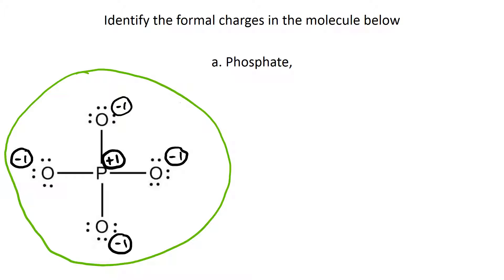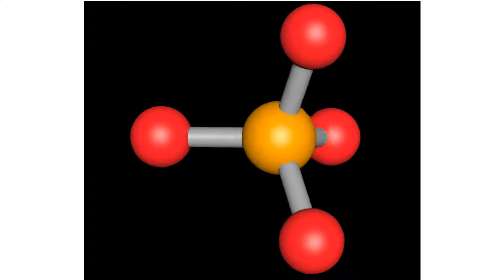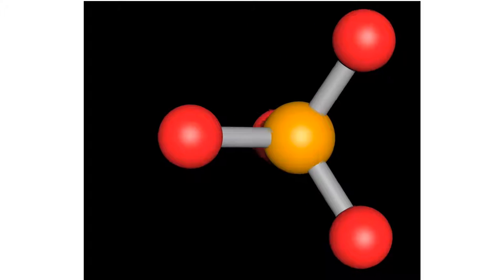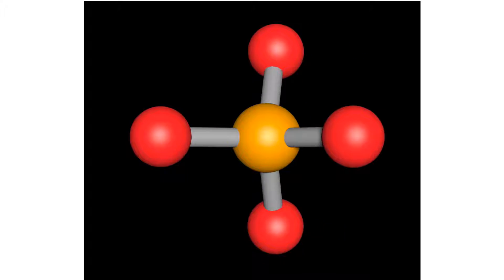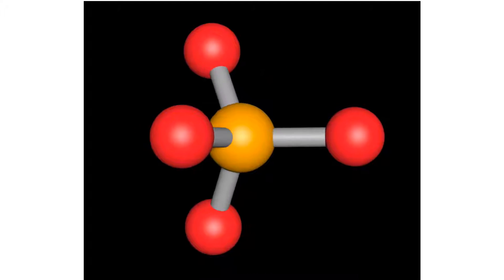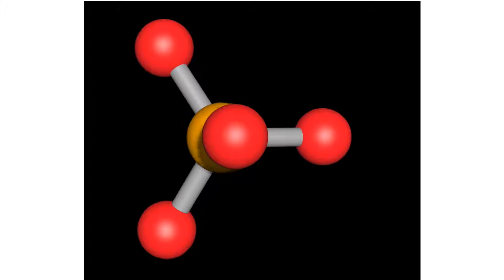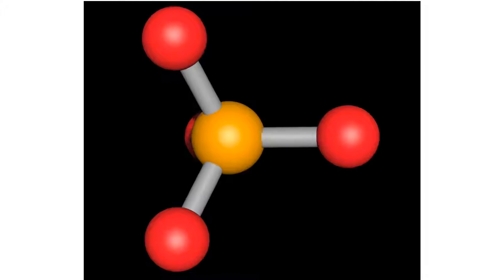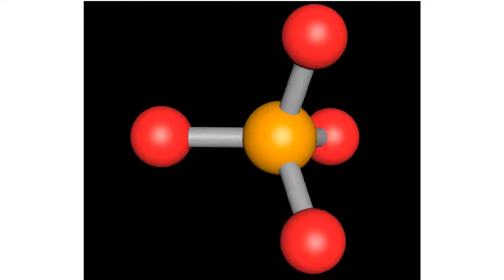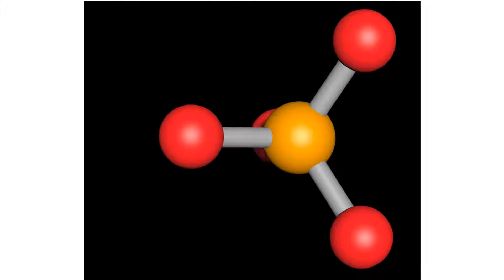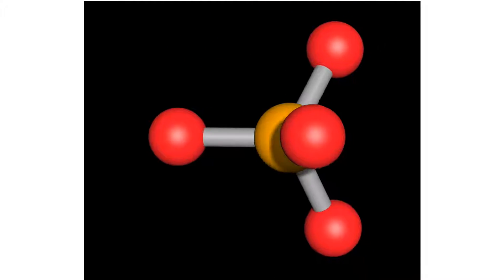If you want to see what this molecule looks like three-dimensionally, it looks like this. The orange atom in the middle is the phosphorus, and the four red atoms are the oxygens.